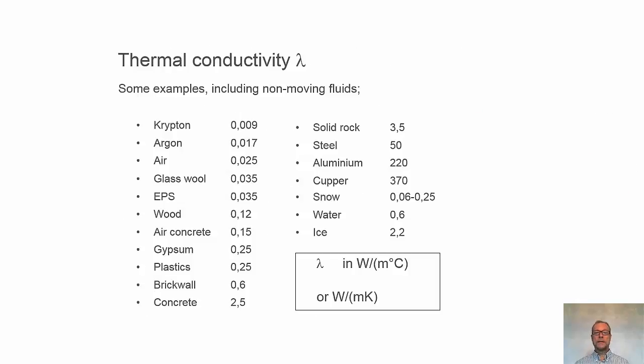The unit of thermal conductivity is watt per meter Kelvin or watt per meter Celsius. Here is a table with thermal conductivity of different materials and gases. We start with krypton and argon, noble gases with very low thermal conductivity, 0.009 or 0.017, and air at 0.025.